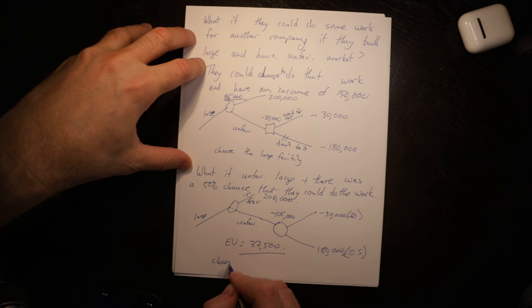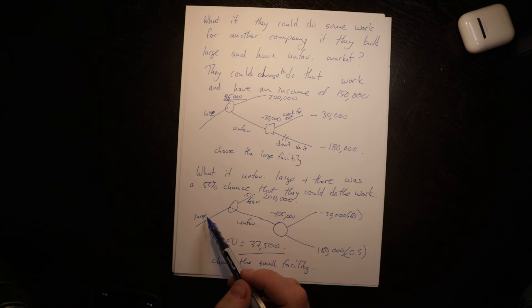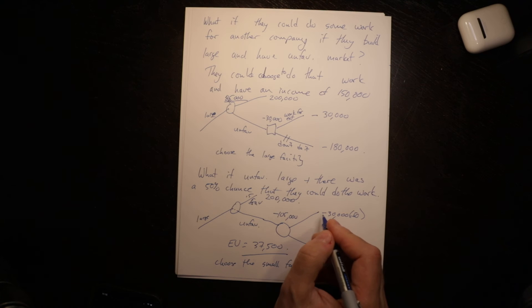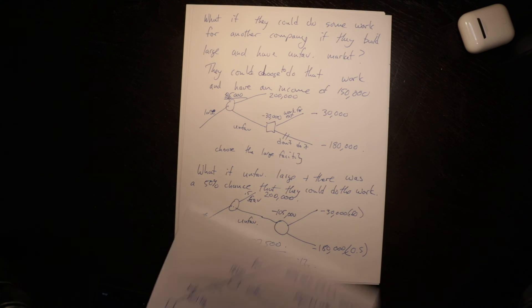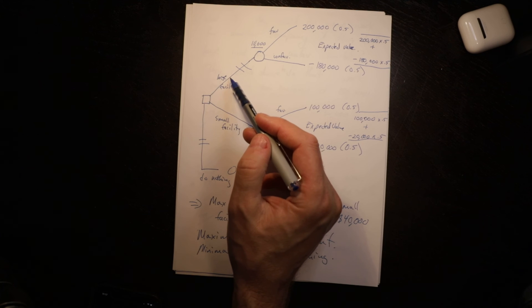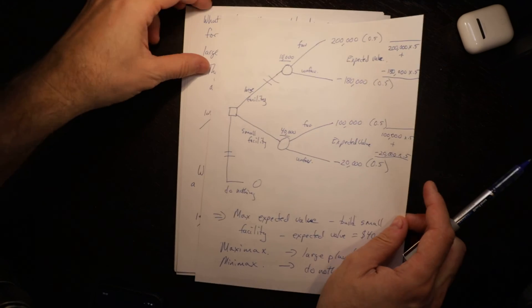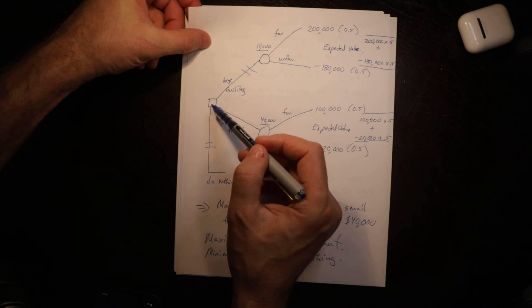So in that case we would still choose the small facility. Where students often go wrong is they say, 'We're going to build the large plant, and if we have an unfavorable market, we're going to choose to sell to the other company.' But if it's uncertain, we can't choose that. Students also sometimes say, 'We're going to choose to have a large facility and then choose to have a favorable market.' When you have uncertainty, you cannot choose which of those uncertain outcomes you will have. That's why it's important to understand the difference between a square — which is a decision — and a circle — which is an uncertain outcome.